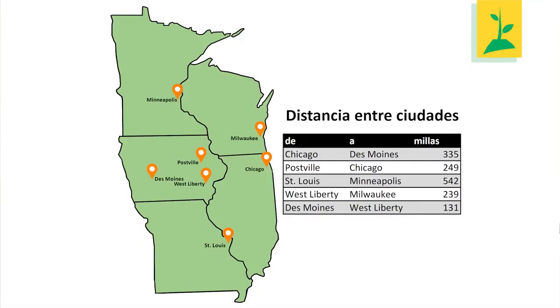We include linguistic practice and specific activities that are tied to the Midwest. For example, Semillas asks our students to practice talking about distances by referring to a regional map, in which we include non-traditional places like Postville and other Midwestern cities. We do all of this in the hopes of making Semillas an open, accessible, and inclusive educational resource that centers on the places our students are living and studying.